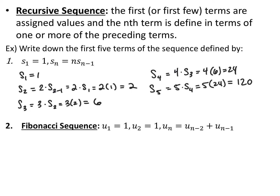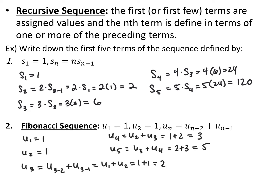A very common recursively defined sequence is called the Fibonacci sequence, which says the first and second terms are both 1, and then every term after that is equal to the previous two terms added together: u sub n is equal to u sub n minus 2 plus u sub n minus 1. So go ahead and find the first five terms. For the first two terms, they already gave us that u sub 1 and u sub 2 are both 1. So u sub 3 is 1 plus 1 equals 2; u sub 4 is 1 plus 2 equals 3; and the fifth term is 2 plus 3 equals 5, so on and so forth.